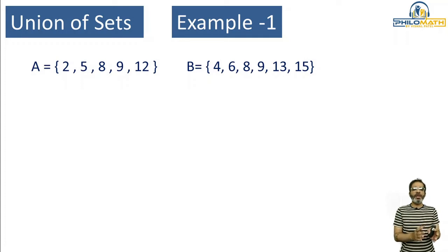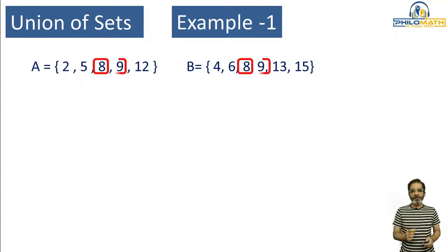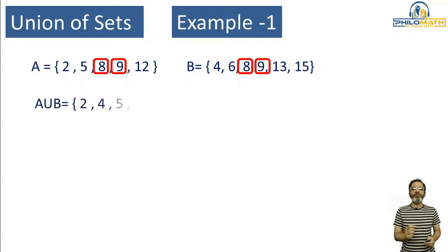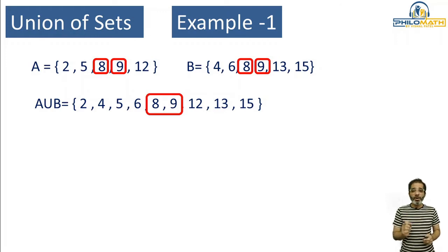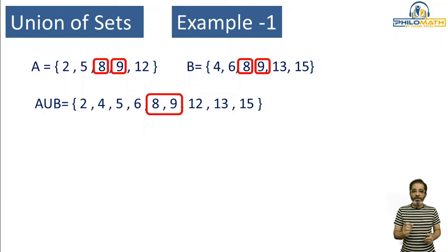Before that, let's look at elements 8 and 9. If you see the two sets carefully, the numbers 8 and 9 are repeated in Set A as well as in Set B. So when I write down the union of two sets — all elements from A and B — I write the elements 8 and 9 only once. Why? Because in a set, when you write in listing method, repetition of elements is not allowed. So 8 and 9, which are common elements, have to be written only once.